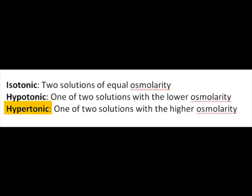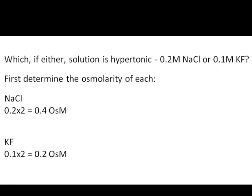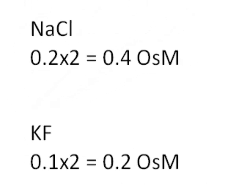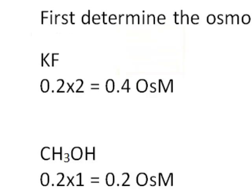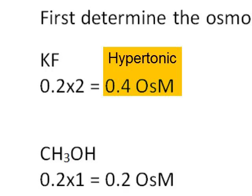When one solution of the two has a higher osmolarity, that solution is considered to be hypertonic. And now we'll do some examples asking which solution is hypertonic. We'll use the same solutions from the previous problem. Because sodium chloride has the higher osmolarity, sodium chloride is hypertonic to potassium fluoride. And in the case of 0.2 molar potassium fluoride and 0.2 molar methanol, potassium fluoride is hypertonic to the methanol solution.